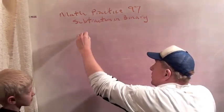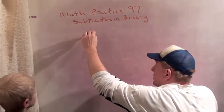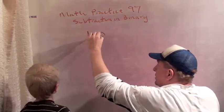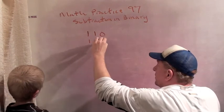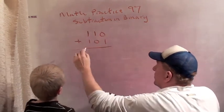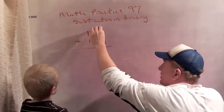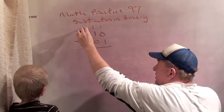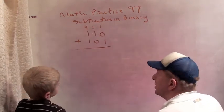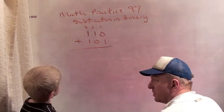Okay, let's do 110 plus 101. Okay, so because this is binary, this is the ones digit, the twos digit, and the fours digit. Okay, so that's making it a little bit different than base 10.